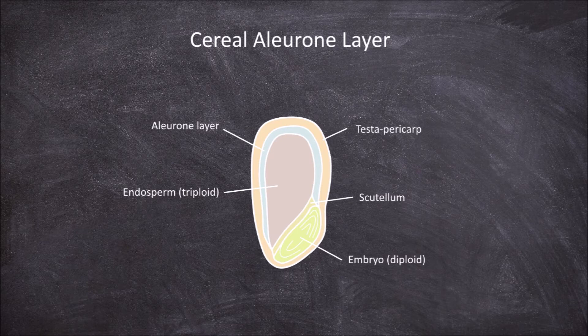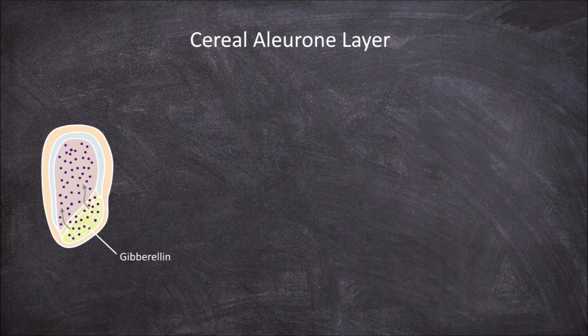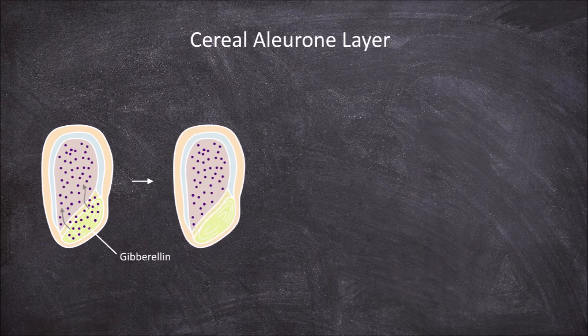It all starts with the embryo synthesising the plant hormone gibberellin. These hormones are then released through the scutellum into the starchy endosperm, and these gibberellins then diffuse into the aleurone layer that surrounds the starchy endosperm.